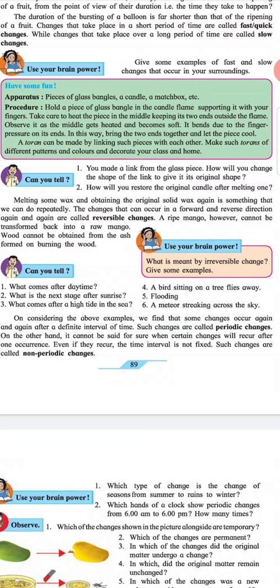Can you tell? What comes after daytime? What is the next stage after sunrise? What comes after a high tide in the sea? A bird sitting on a tree flies away. Flooding. A meteor streaking across the sky.